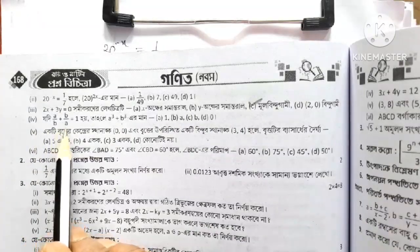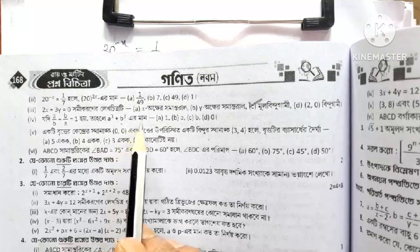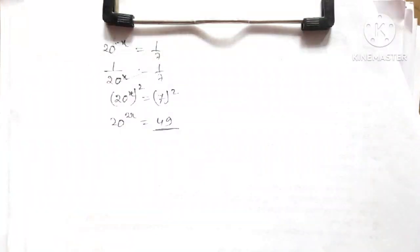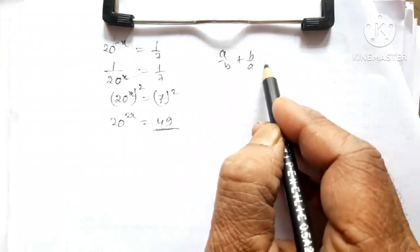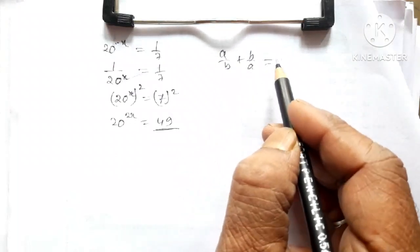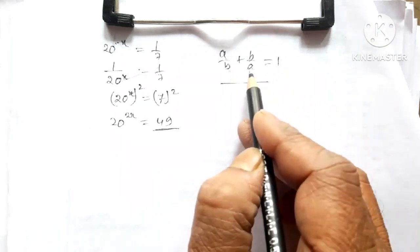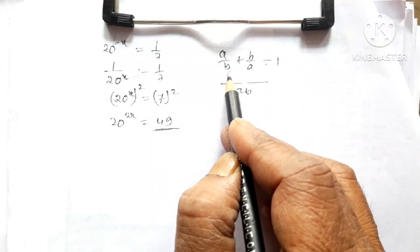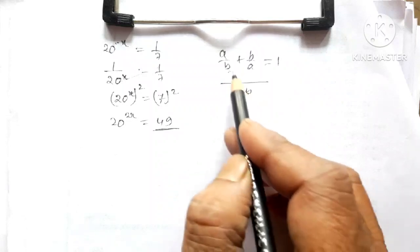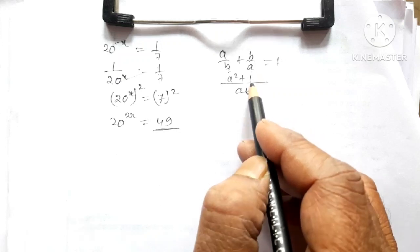A by B plus B by A is equal to 1. Q plus B is equal to 1. In terms of JAB plus B by A, this is equal to 1. Then the advantage of AB is equal to 1. So the advantage is equal to 0. D is equal to 2.